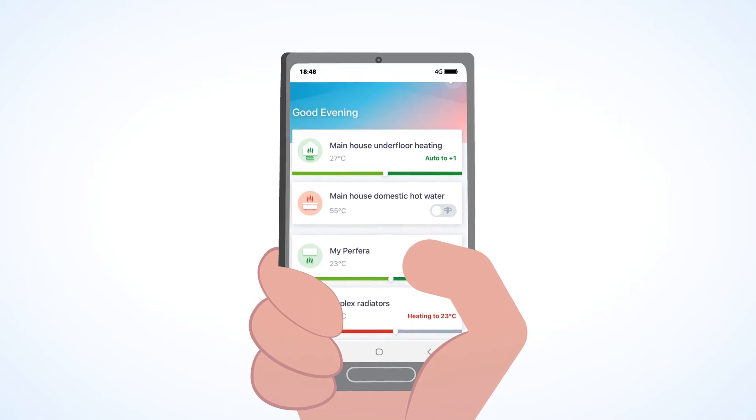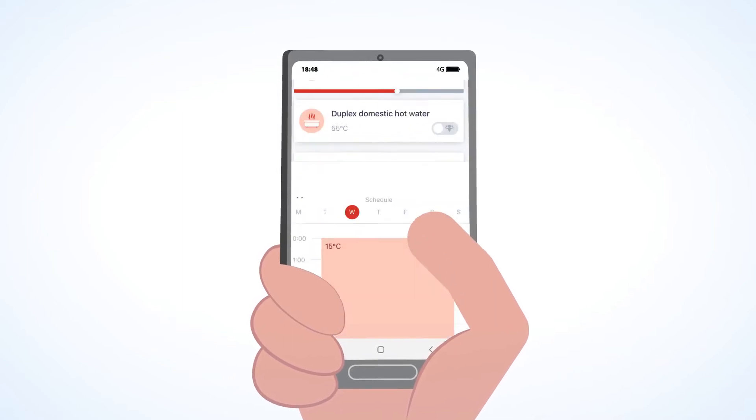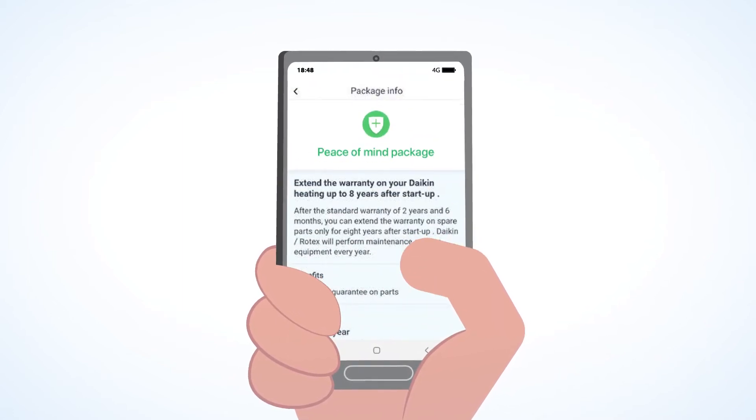With that app, you can switch the units on and off, create a schedule, and see the service offer proposed by Daikin.